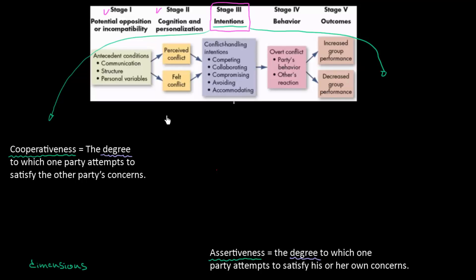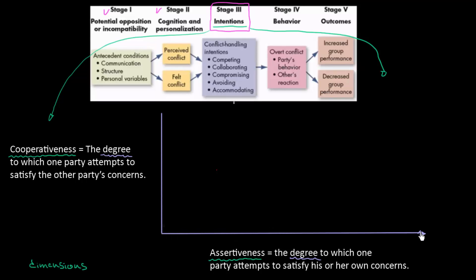We can draw a simple graph where we can display all of these different intentions. On one axis we have low to high cooperativeness, and on the other axis we have low to high assertiveness. Now we can take all five of these behaviors or intentions and place them into this graph.